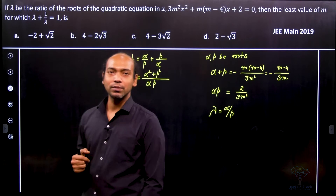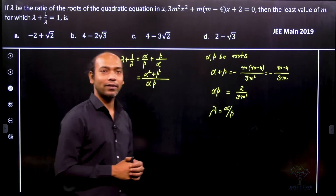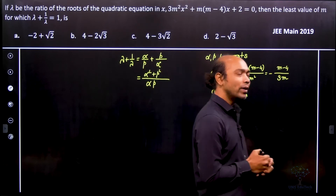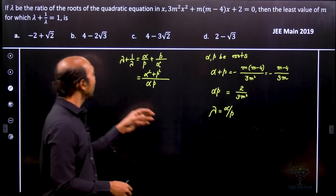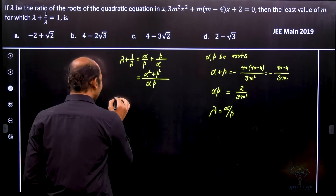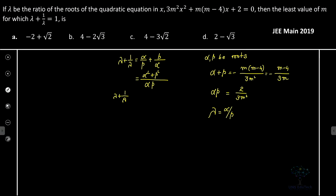Now we need to calculate alpha squared plus beta squared and alpha beta. We consider the ratio lambda plus 1 by lambda as equal to 1, because that is the given condition. So therefore lambda plus 1 by lambda equals 1 implies alpha squared plus beta squared equals alpha beta. That implies alpha plus beta whole squared minus 2·alpha·beta equals alpha·beta, which implies alpha plus beta whole squared equals 3·alpha·beta.